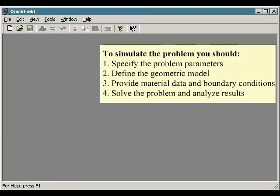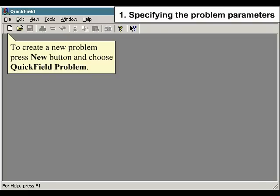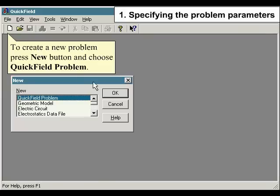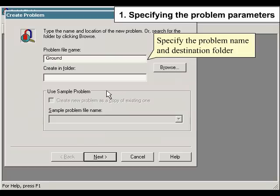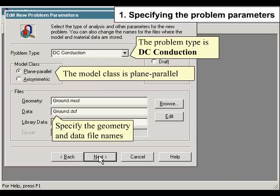Specifying the problem parameters: to create a new problem press new button and choose QuickField problem. Specify the problem name and destination folder. The problem type is DC conduction, the model class is plain parallel.